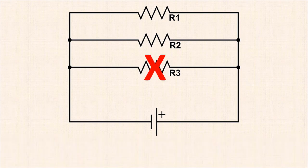So, if one of the resistors in this simple parallel circuit blows open, current still flows through the other resistors.